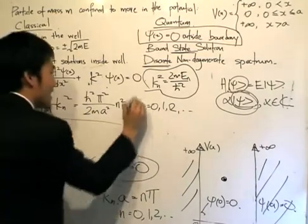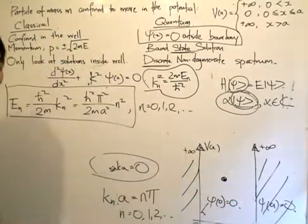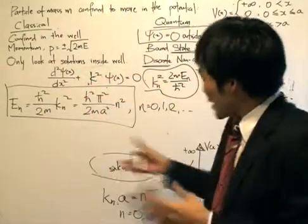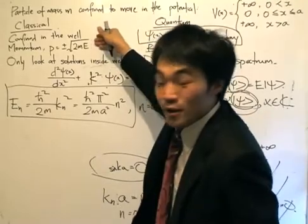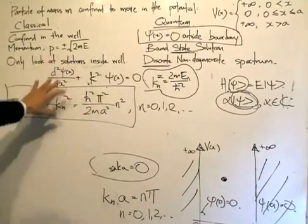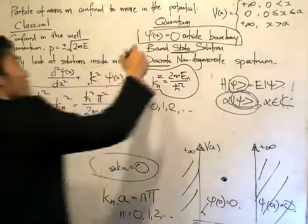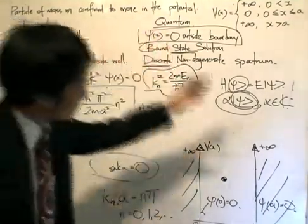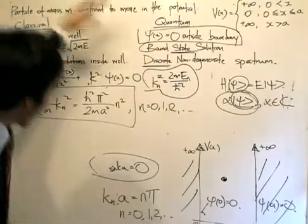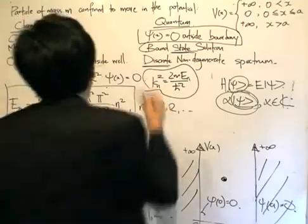And this, ladies and gentlemen, is the discrete energy spectrum for the unsymmetric infinite square well. Who would have thought it would come down to the solutions of a sine equation? Classically there are no restrictions on energy — continuous energy values. But in the quantum picture we get discrete energy values, and these discrete values are a consequence of the bound state solution: a particle confined inside the well. By solving the Schrödinger equation and applying bound state conditions, we have conclusively shown that the energy values are in fact discrete.